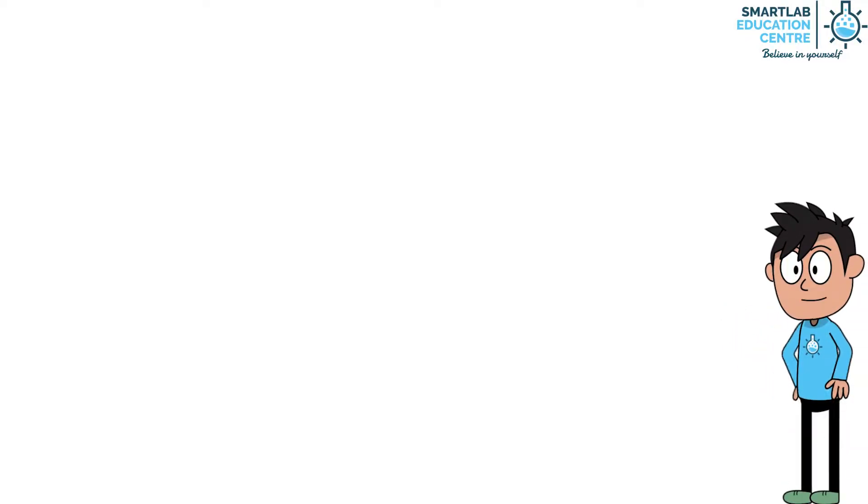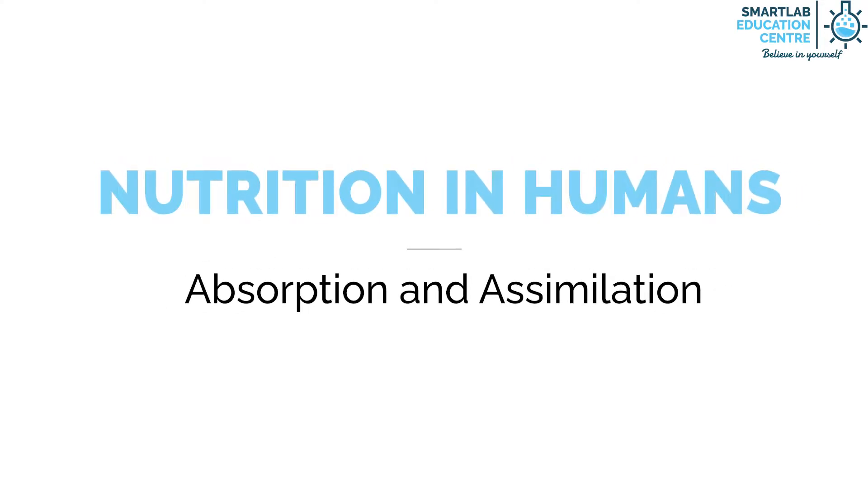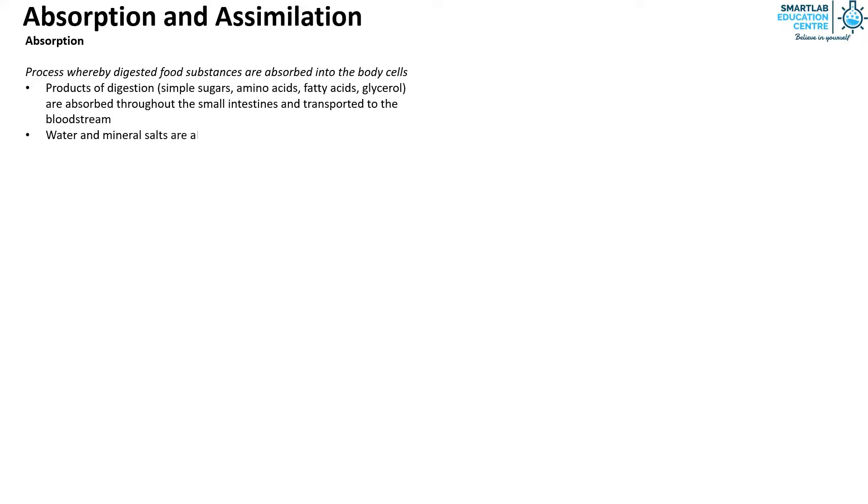Welcome back everyone, today we learn about absorption and assimilation, starting with absorption. Absorption is the process whereby digested food substances are absorbed into the body cells. The products of digestion such as simple sugars, amino acids, fatty acids, and glycerol are absorbed throughout the small intestines and transported to the bloodstream.